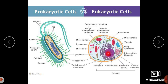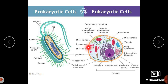The nucleus includes the nucleolus, nucleoplasm, chromatin, and a nuclear envelope. There are also microfilaments, lysosomes, and microtubules. The cytoplasm, ribosomes, and plasma membrane are the three components common between prokaryotic and eukaryotic cells.